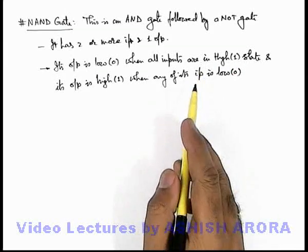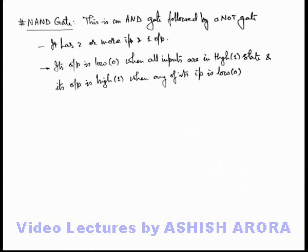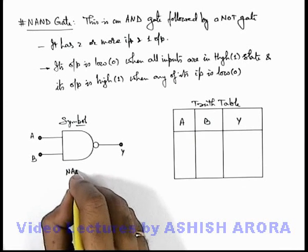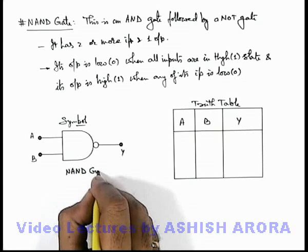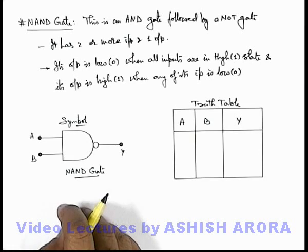Based on this logic we can develop the truth table and we'll also see the symbol used for NAND gate. And this is the corresponding truth table we'll draw.